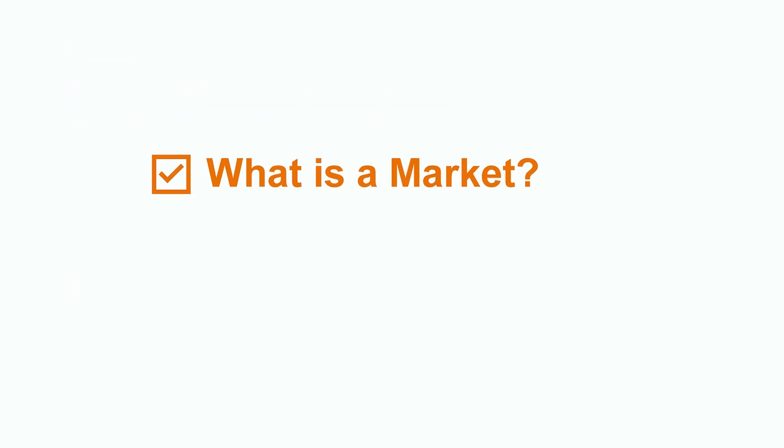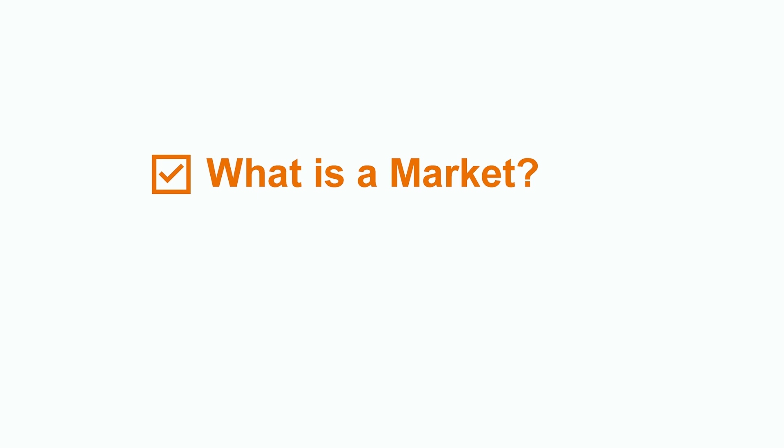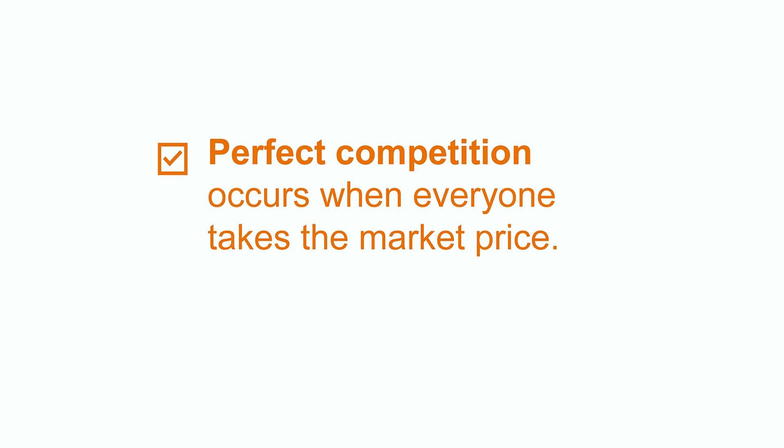Now let's recap what we learned today. First, we learned what is a market, which is basically buyers and sellers coming together to exchange their goods and services — markets can be centralized or decentralized. Next, we learned what is competition, which essentially means that buyers and sellers have multiple options, and that the price will converge on what buyers and sellers are willing to buy and sell for, which is also called the market price. And lastly, we learned about perfect competition, which is a scenario where the good or service being offered is the exact same, and there are so many buyers and sellers that no one can impact the price — everyone takes a single market price. That wraps up our video on markets and competition. Thanks for watching, and I hope you check out other videos and topics on Czech.